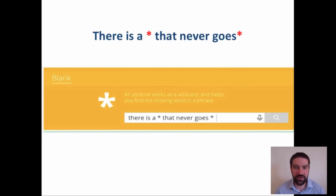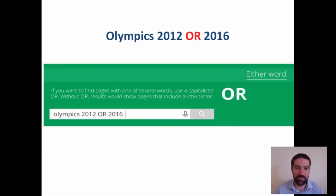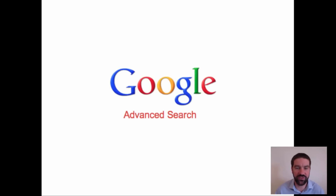If you're really stuck and can't quite remember a word, phrase, or song lyric, you can use the asterisk key to fill in the blanks. For example, 'there is * that never goes *' and see what's retrieved. You can also use the word OR to look for things within a specific context, for example 'Olympics 2012 OR Olympics 2016'.